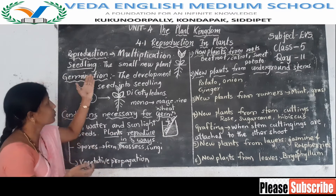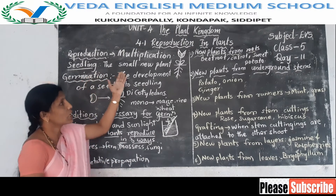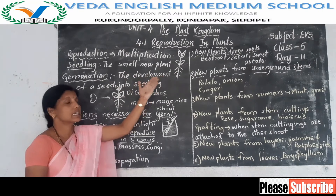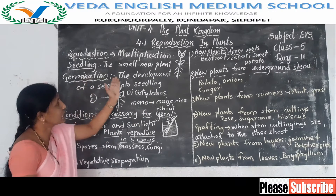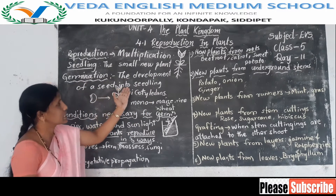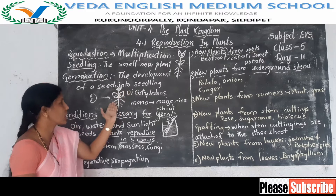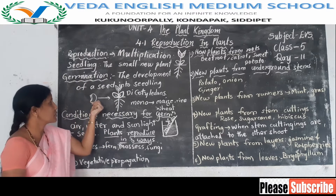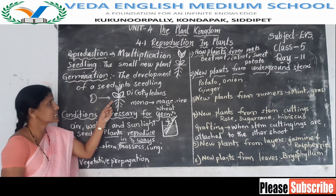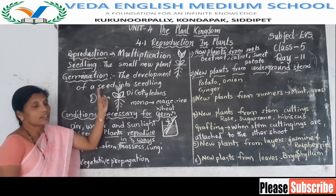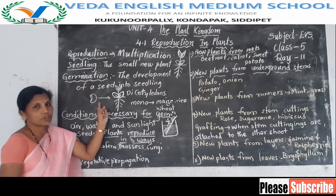What is seedling? The small new plant is called a seedling. What is germination? The development of a seed into a seedling is called germination.